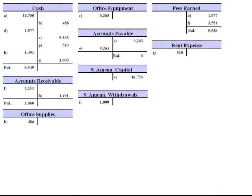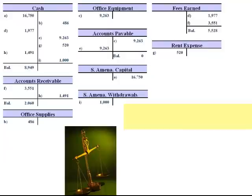Once we've totaled these transactions, we take each account and include it on the trial balance. The format of a trial balance lists the company name — Amina Company — the report title — Trial Balance — and the date for which the trial balance is prepared — May 31, 2011. We have two columns: one for the accounts with debit balances, and one for the accounts with credit balances.